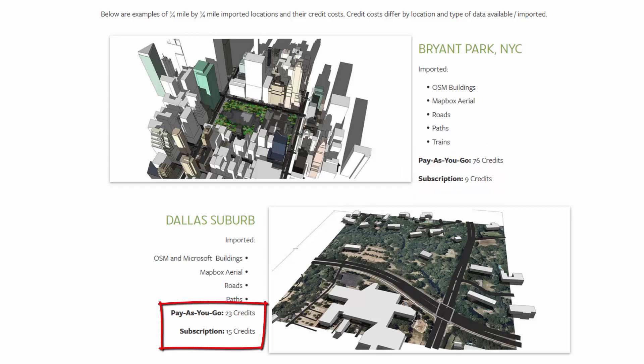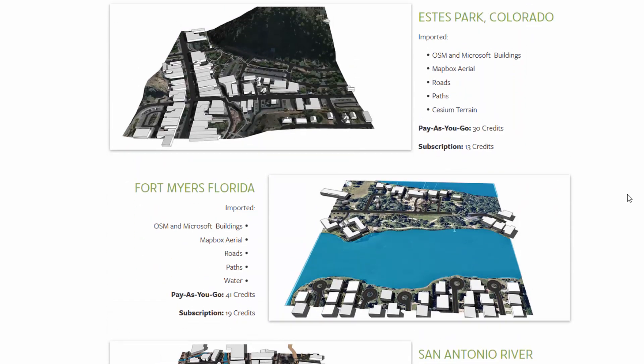The next one is a Dallas suburb — less buildings, mostly roads. That included OpenStreetMap buildings and Microsoft buildings, a high-resolution Mapbox aerial, roads and paths. It cost 23 credits as pay-as-you-go and 15 credits with the subscription. Here's Estes Park, Colorado — this one includes terrain, Mapbox aerial, roads, paths, and buildings. Pay-as-you-go was 30 credits, and the subscription was 13 credits.